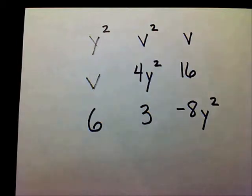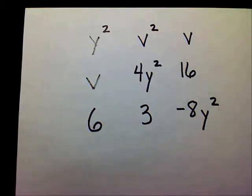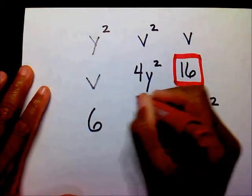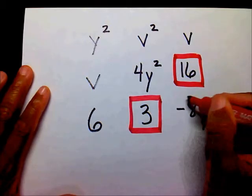Like terms have the same variable with the same exponent, or it could just be a variable standing alone or a number standing alone. Do you remember what that type of term is called when you just have a number? Right — it's called a constant. So let's start out with our constants. Do we see any constants, just numbers standing alone? We have 16, 3, and the 6.